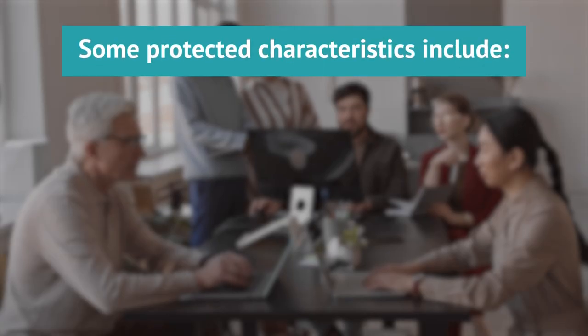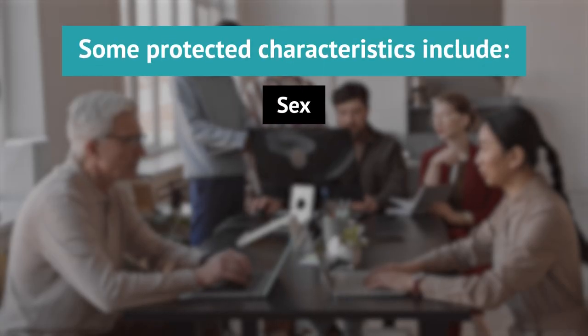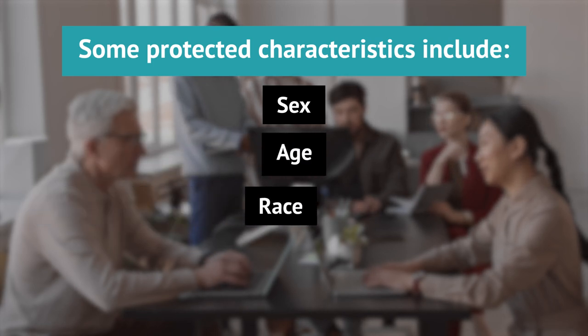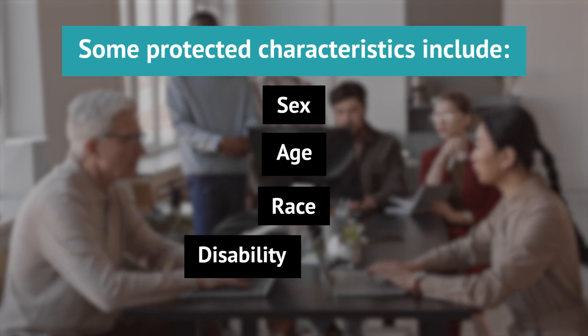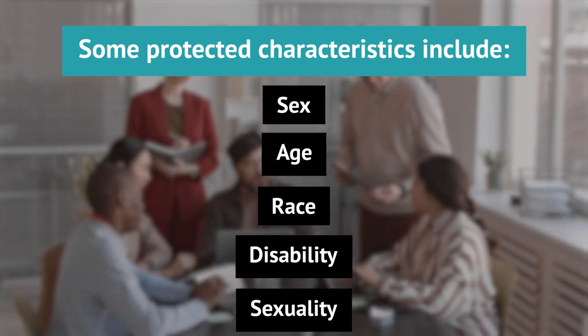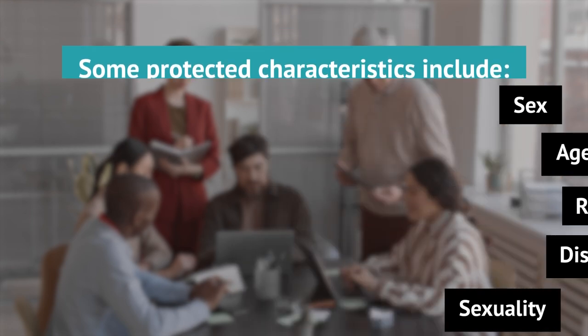The law, through different regimes which I'll talk about in a second, protects different characteristics. For example, sex discrimination is unlawful, so it's unlawful to treat someone less favourably because of their sex. Age discrimination is unlawful. Race discrimination is unlawful. Disability discrimination is unlawful. And we've got videos on our site talking about each of those different types of discrimination and what they mean.